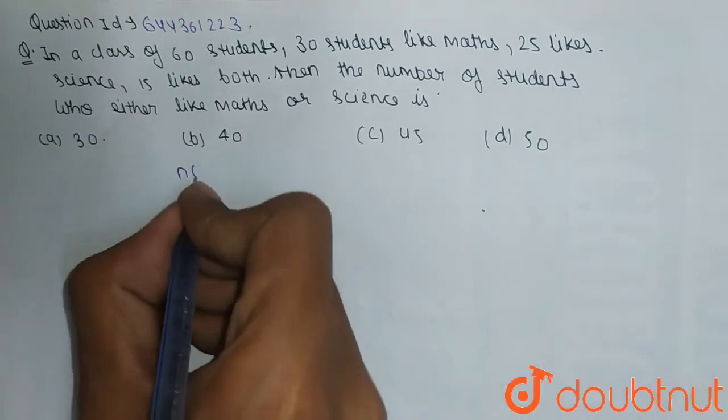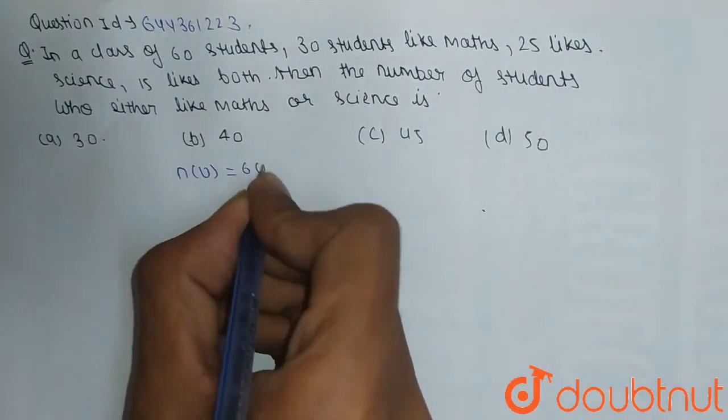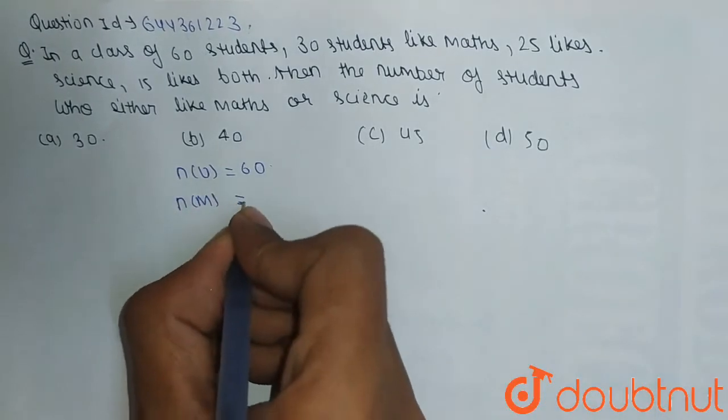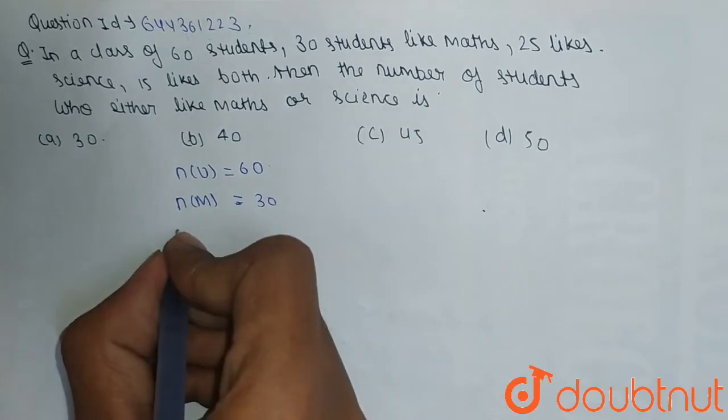So here we have given n(U) which is equal to 60, and let's consider the students which like maths is equal to n(M). n(M) is equal to 30, and the students which like science n(S) is equal to 25.